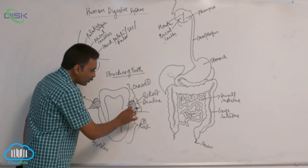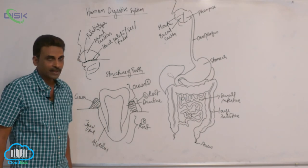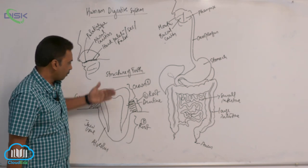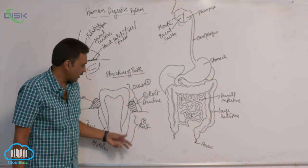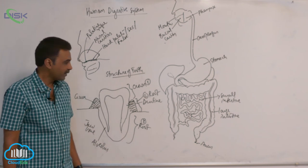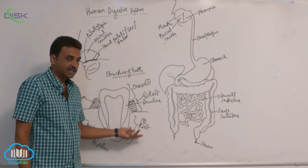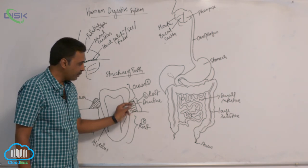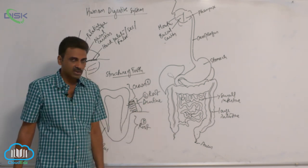Where the fleshy gum is present, that region is called the neck. So in a tooth we have three parts: the crown — part exposed externally outside; the root — part embedded inside the jaw bone; and the neck — the region in between where the gum-like structure is present.